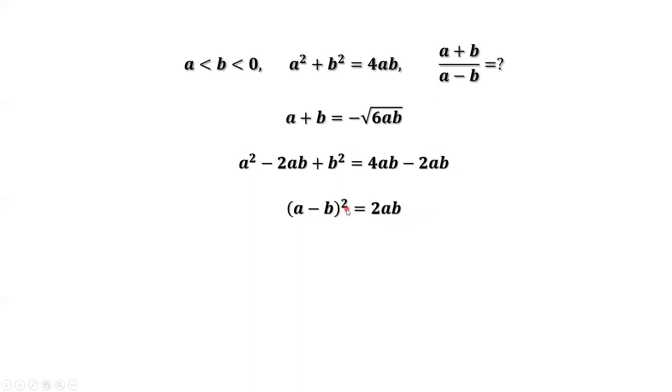We don't need a square. Take the square root on both sides. We have a minus b equals positive or negative square root of 2ab. Again, we need to find a minus b. Again, we need to use the given condition to determine if it is positive or negative.